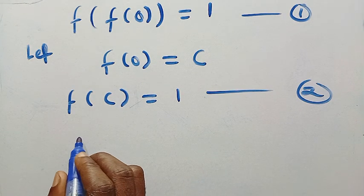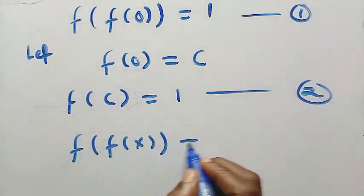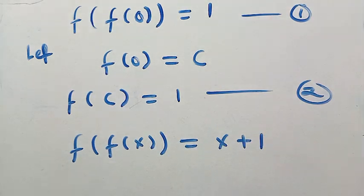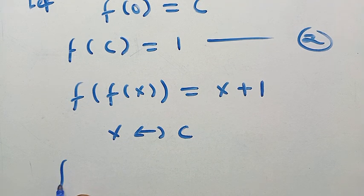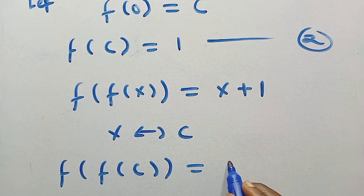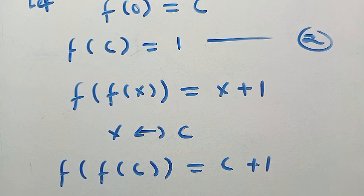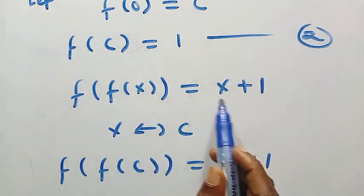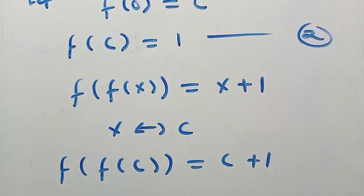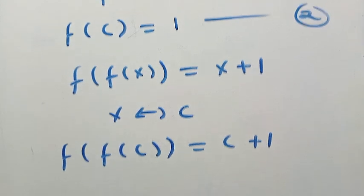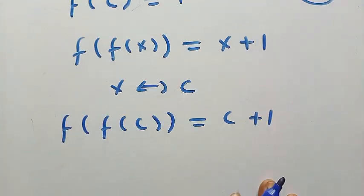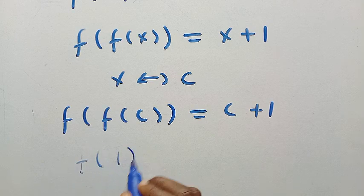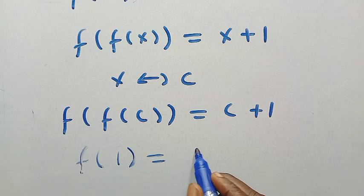Recalling back from the first given equation, f of f of x equals x plus one. Now I want to replace x with c. So we have f of f of c equals c plus one. Since we already know f of c equals one, we replace f of c with one, giving us f of one equals c plus one. We call this equation three.